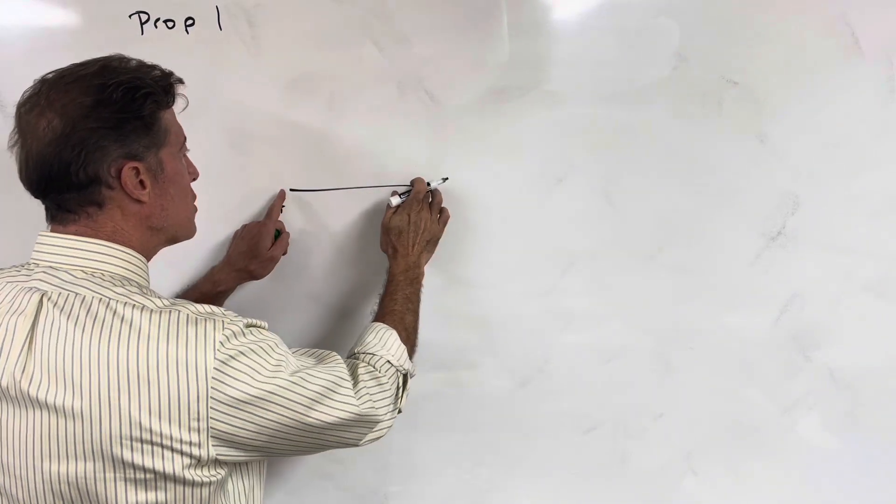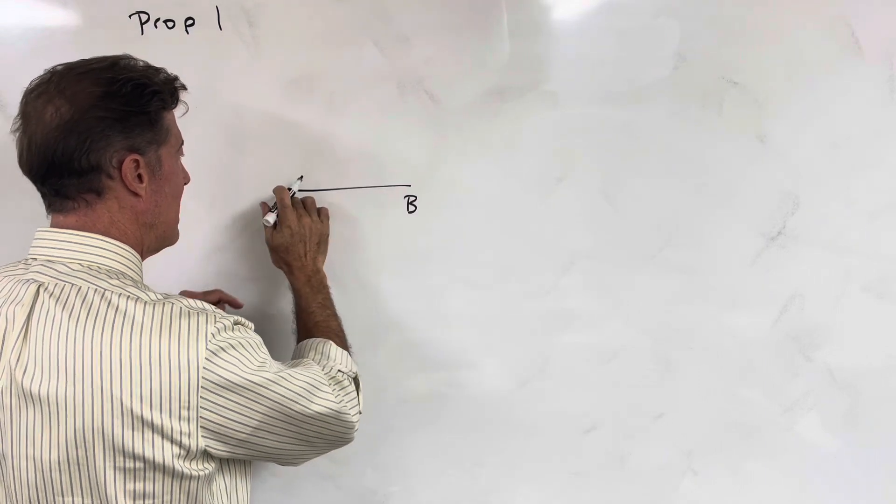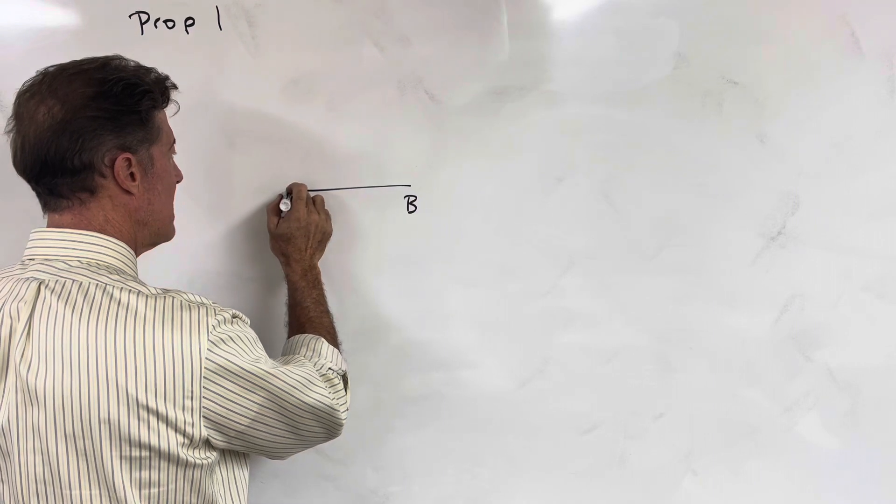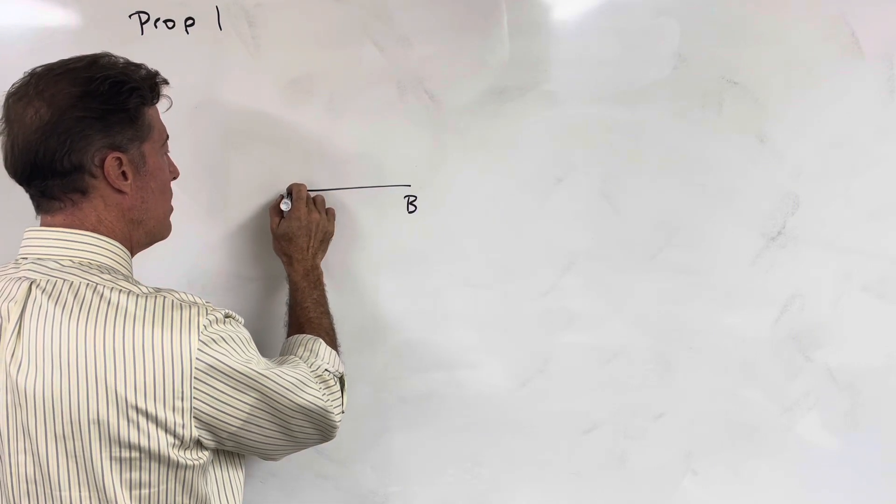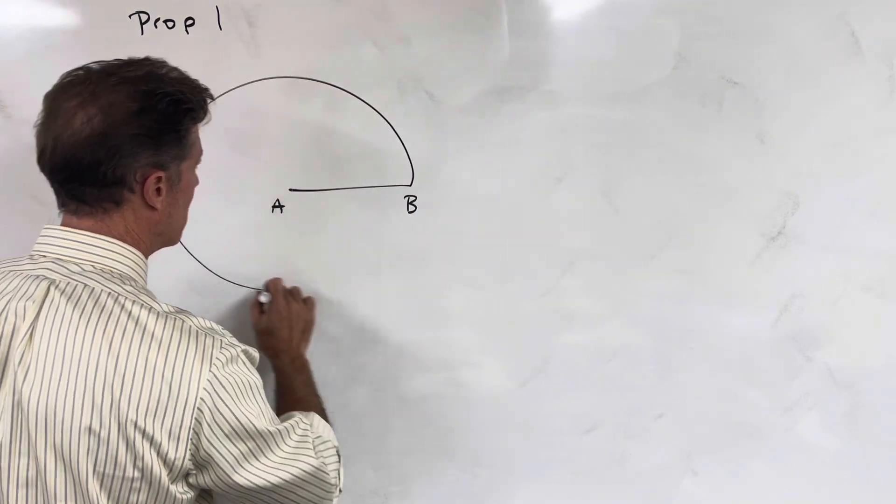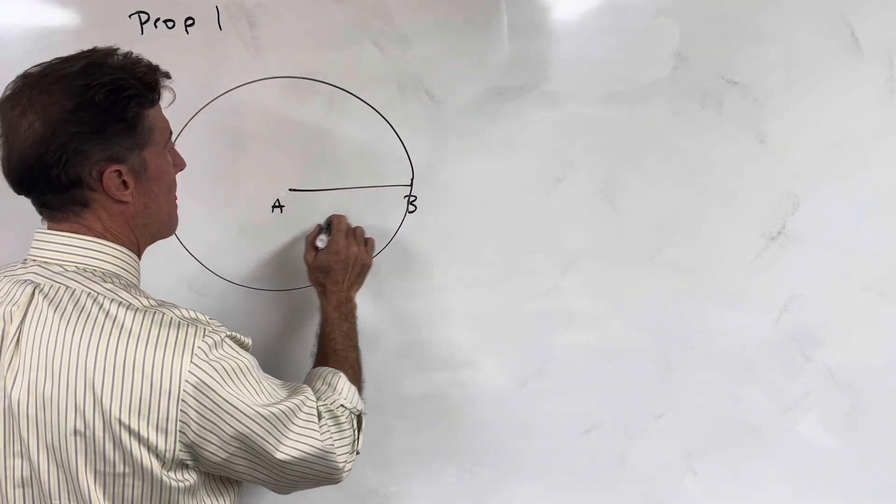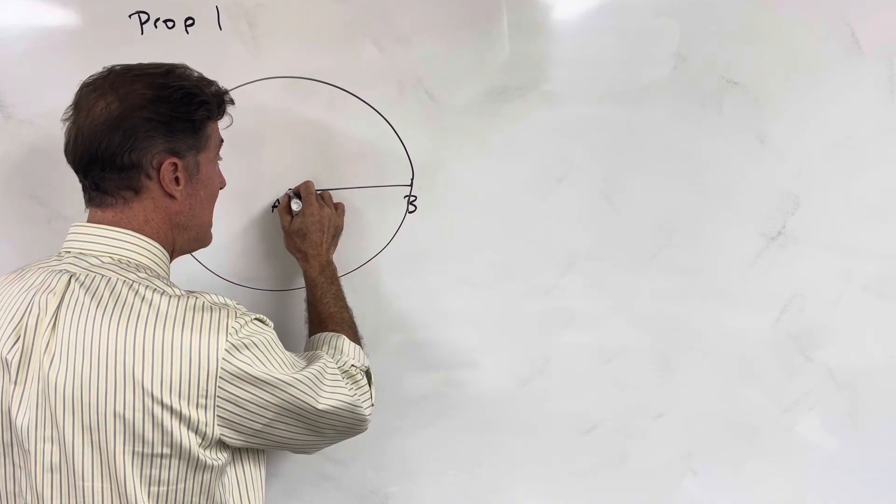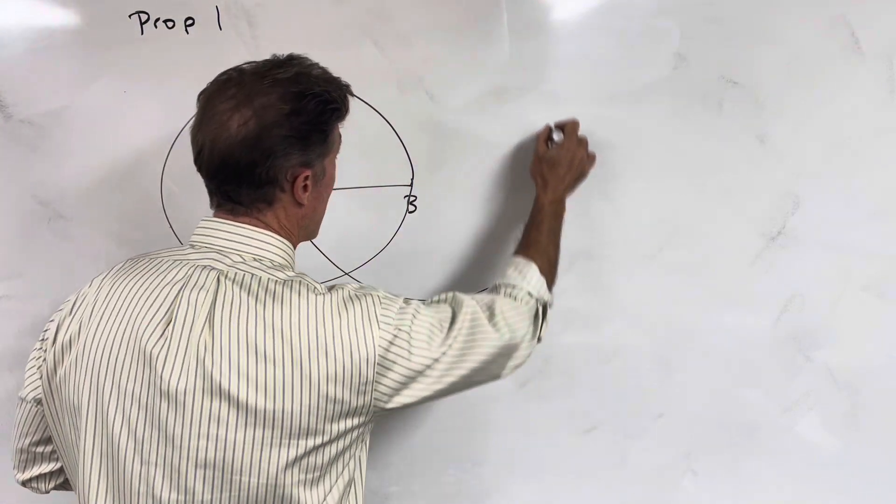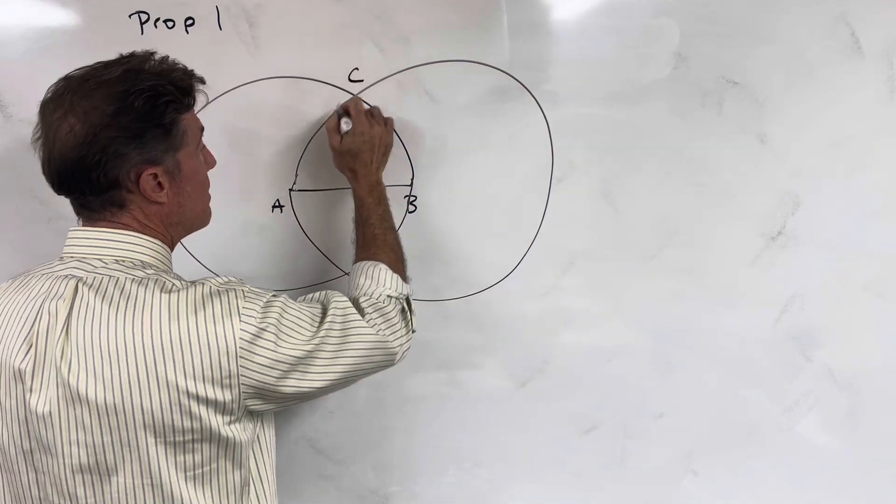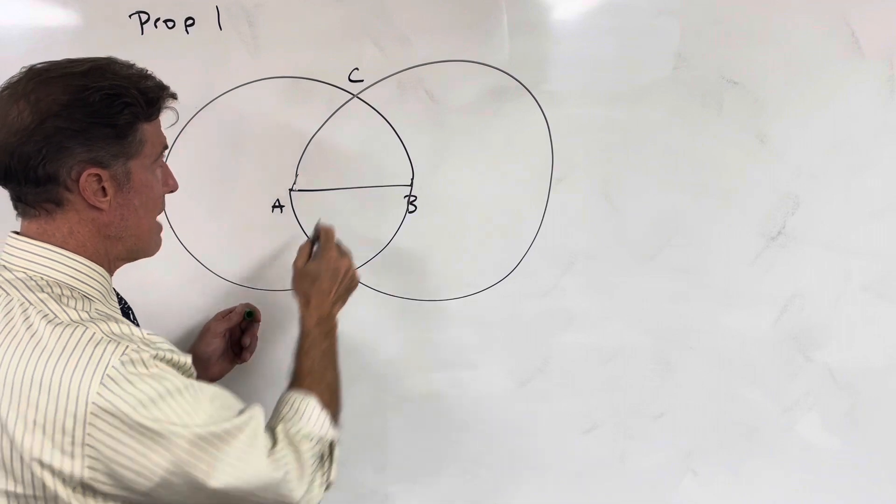So we're going to find the extremities of our line, and on each end we're going to build a circle. At this end, we're going to build circle A, with A as our center and AB as our distance. And then we're going to use B as our center and BA as our distance, and we're going to describe circle B. And the point at which they intersect, we'll describe as point C.